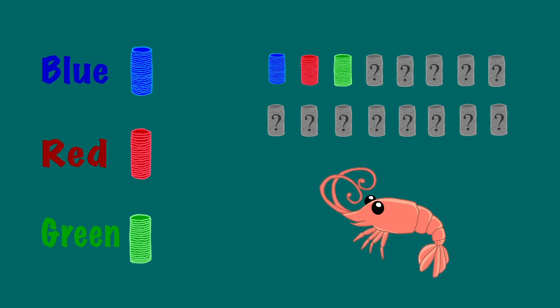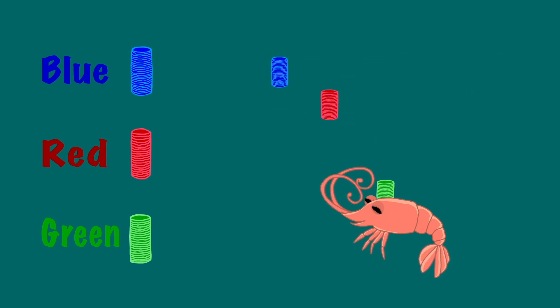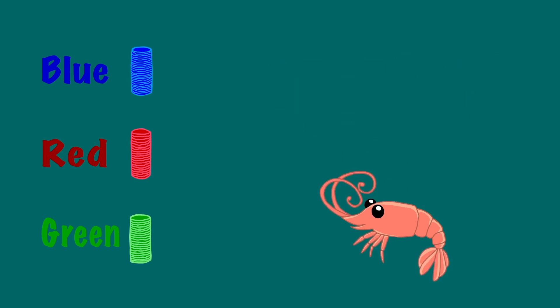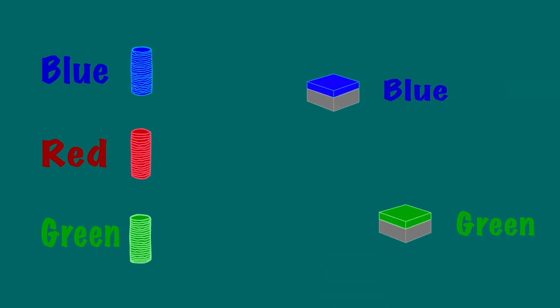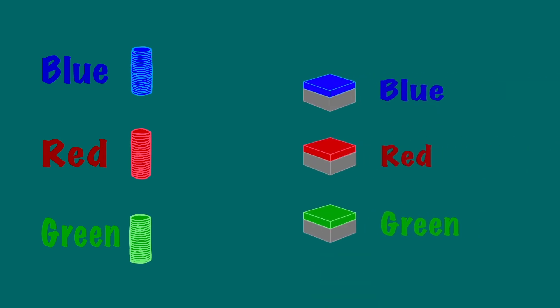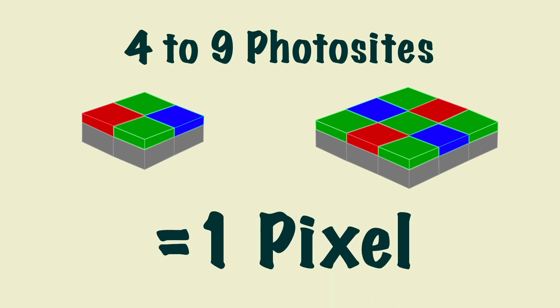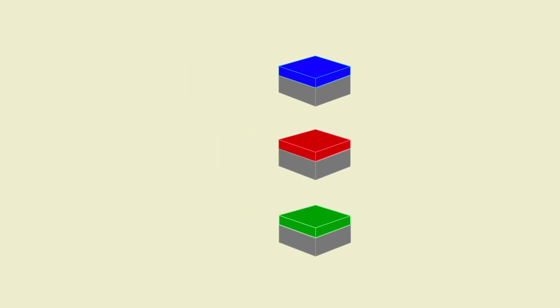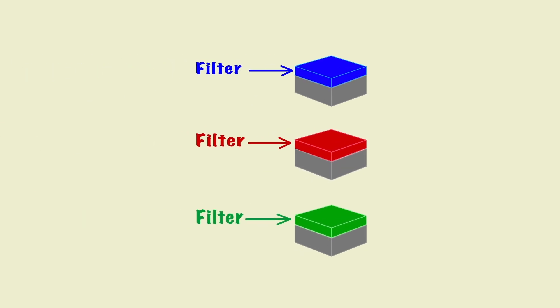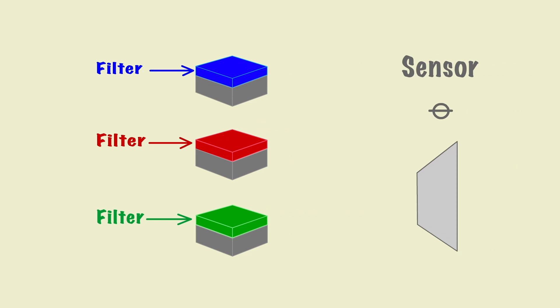But digital sensors are trying to best reflect how a human sees the world. So therefore, a sensor is made up of blue, green and red receptors. In digital terms, these are called photosites. It takes four to nine photosites to make up one pixel, and there are thousands of pixels on a sensor.